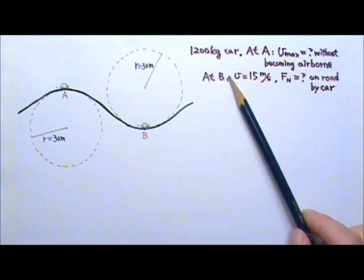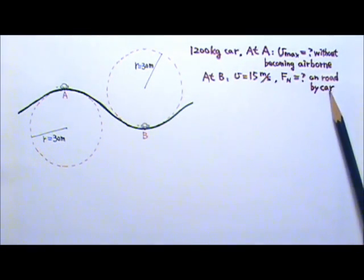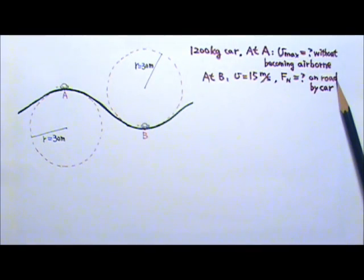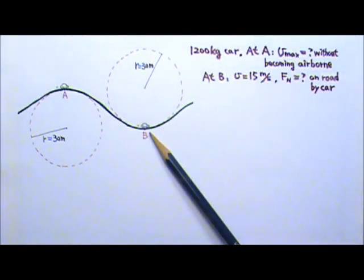And for point B, we're looking for the normal force the car exerts on the road if the car has a speed of 15 meters per second at point B.